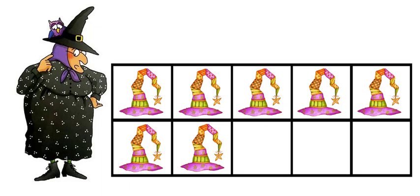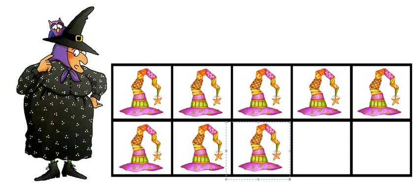Mildred wants more hats. How many hats are there now? One, two, three, four, five, six, seven, eight. Great counting. Another way we could count is to say five, six, seven, eight. We just counted on.